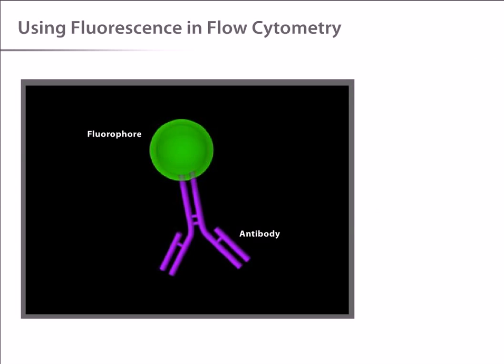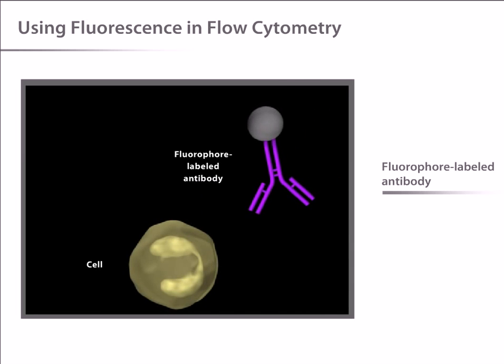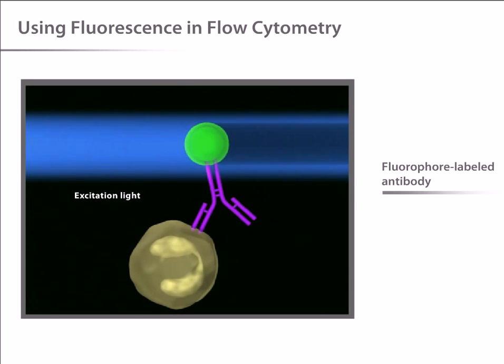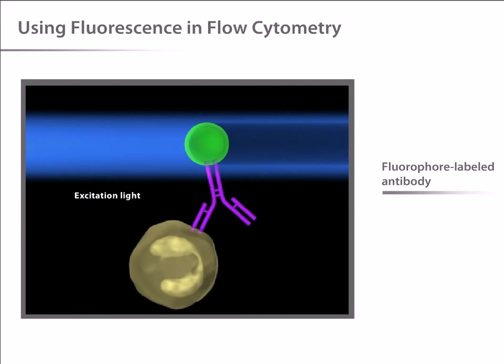One of the most common ways to study cellular characteristics using flow cytometry involves the use of fluorescent molecules, such as fluorophore labeled antibodies. In these experiments, the labeled antibody is added to the cell sample. The antibody then binds to a specific molecule on the cell surface or inside the cell. Finally, when laser light of the right wavelength strikes the fluorophore, a fluorescent signal is emitted and detected by the flow cytometer.